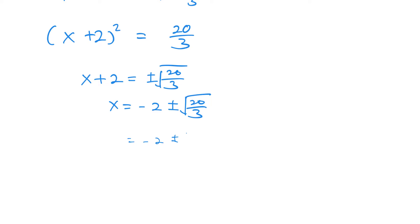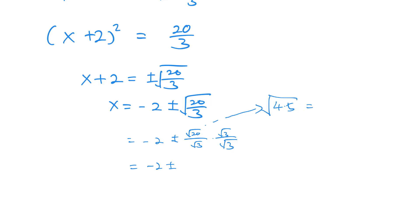We need to rationalize: √(20/3) — multiply numerator and denominator by √3 — so it becomes (√20 · √3) / 3. Now √20 = √(4×5) = 2√5, so this simplifies to 2√5 · √3 / 3 = 2√15 / 3. Therefore x = −2 ± 2√15/3. This is the final answer.